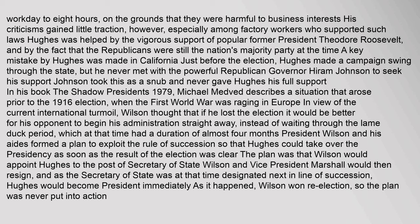In his book 'The Shadow Presidents' (1979), Michael Medved describes a situation prior to the 1916 election: Wilson thought that if he lost, it would be better for his opponent to begin administration straight away rather than wait through the lame duck period of almost four months. Wilson and his aides formed a plan to exploit the rule of succession so that Hughes could take over the presidency immediately. The plan was for Wilson to appoint Hughes as Secretary of State, then Wilson and Vice President Marshall would resign, making Hughes president at once. As it happened, Wilson won re-election, so the plan was never put into action.